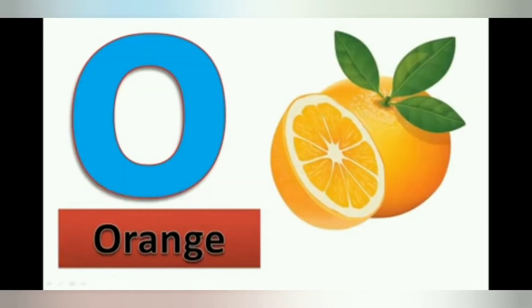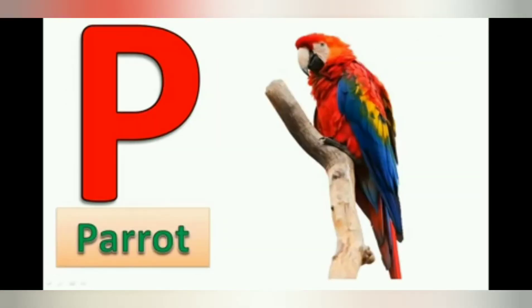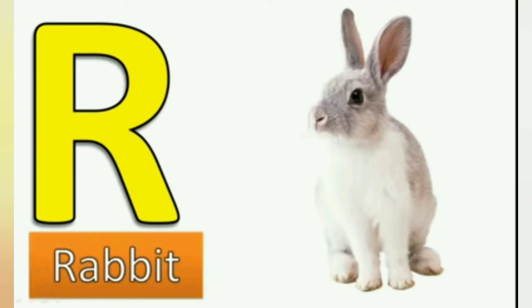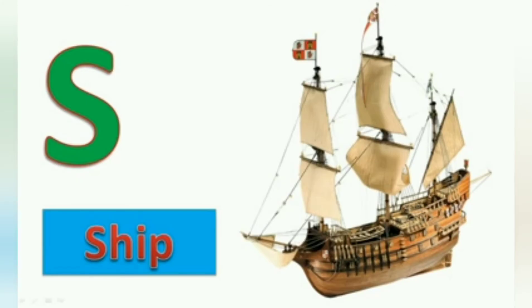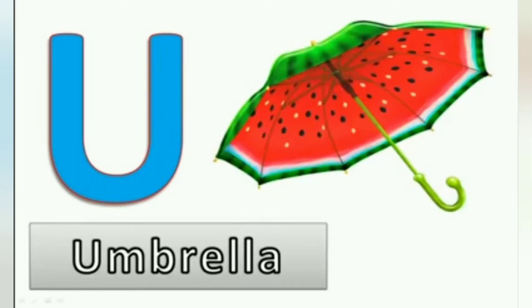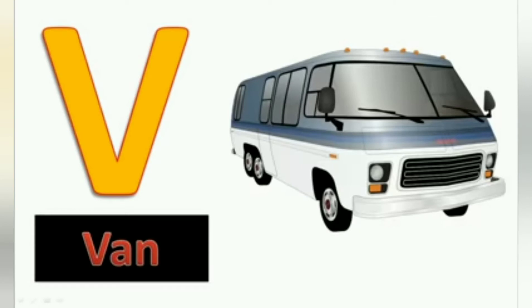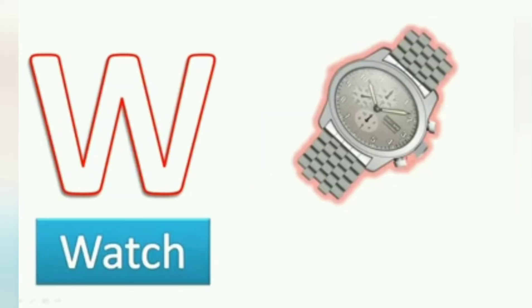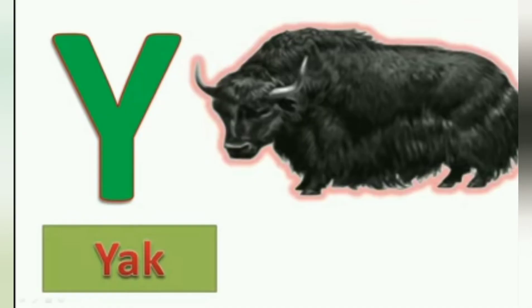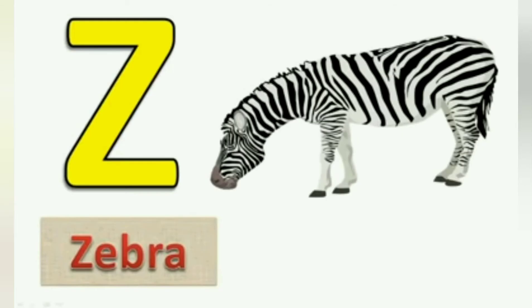L, L for lion. M, M for mango. N, N for nest. O, O for orange. P, P for parrot. Q, Q for queen. R, R for rabbit. S, S for ship. T for tiger. U, U for umbrella. V, V for van. W for watch. X for Xmas tree. Y for Yak. Z, Z for Zebra.